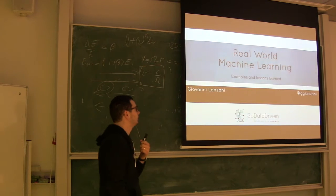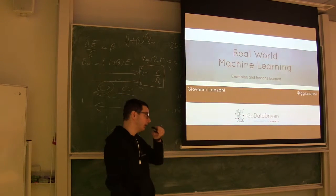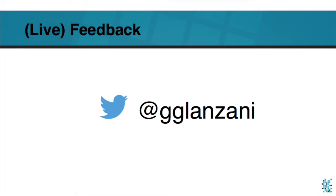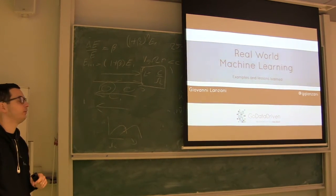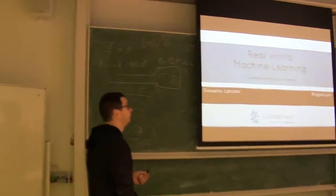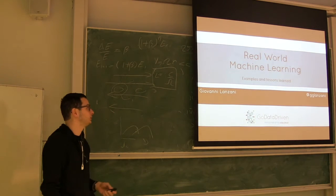Good morning, everybody. So my name is Giovanni Lanzani. I work for GoDataDriven. I'll present myself in a bit. That's my Twitter handle if you want to tweet snarky comments live. My wife usually monitors that. And this morning she was angry with me. So you make her happy with all the negative comments. And I encourage you to do so.